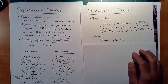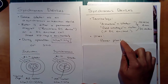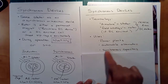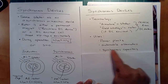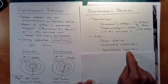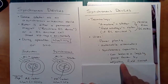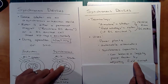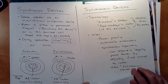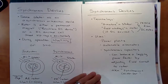Uses for synchronous devices include drones, power plants for generating electricity, automobile alternators, and synchronous capacitors — where you can use it as a big variable capacitor to adjust your power factor. It can balance a lagging power factor by adjusting the field current used to create the magnetic field. This is also called a synchronous condenser.